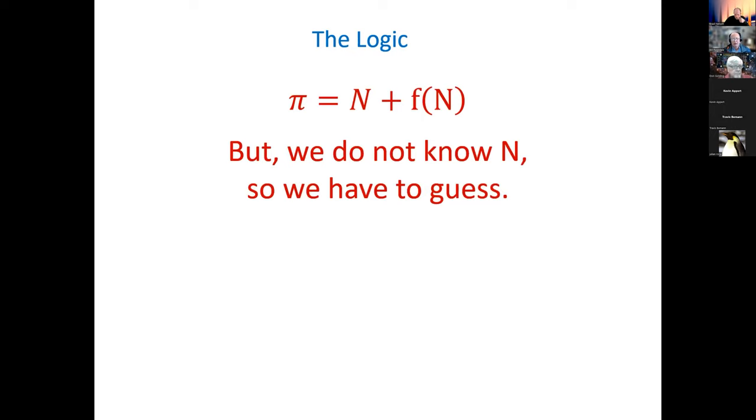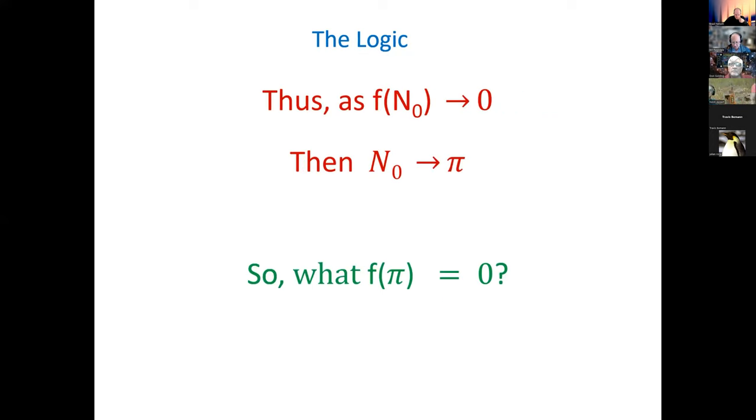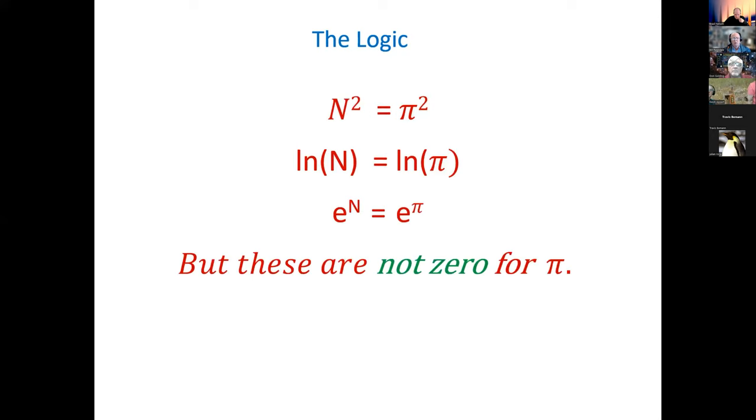As n grows toward pi, the error function will get smaller and smaller. And finally, when our calculated value of n is pi, the error function will be zero. So the key to this is to find where is there a function derived from pi that will be zero at the value of pi. We will be then iterating n sequentially.